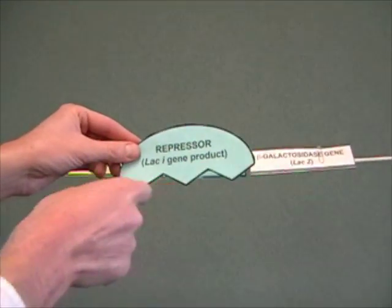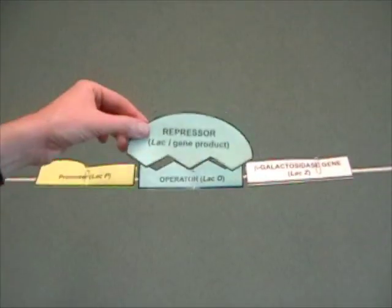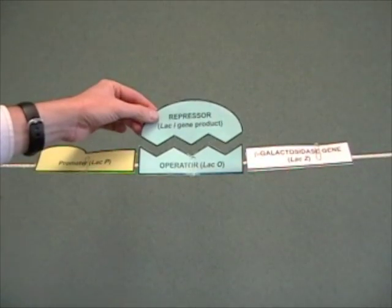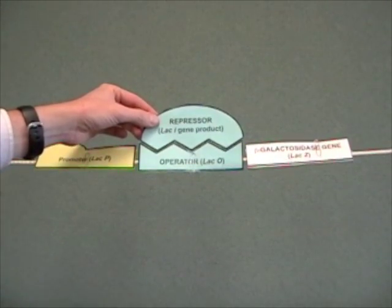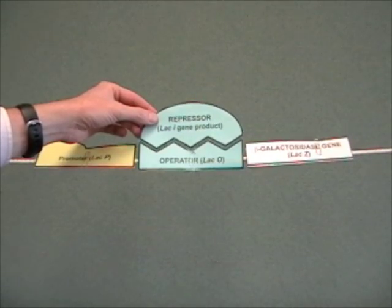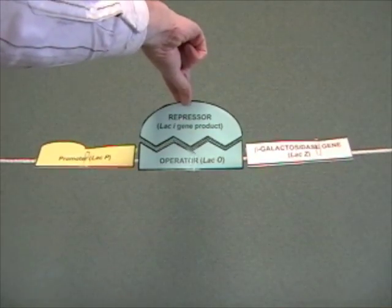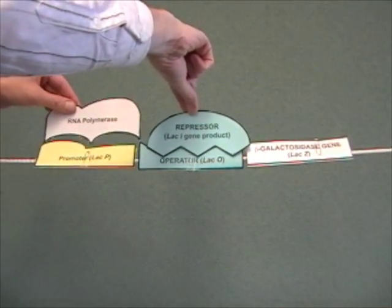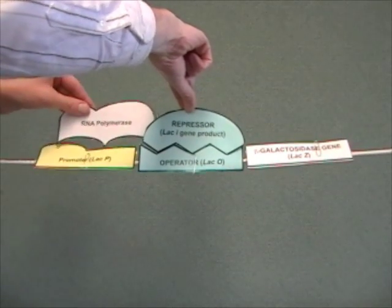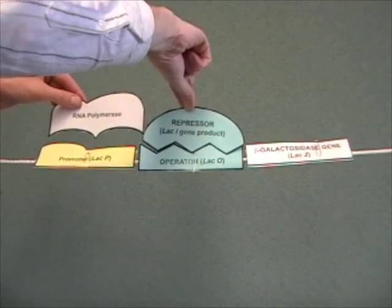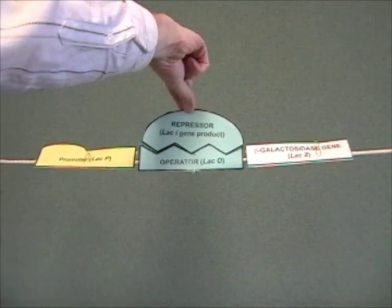By looking at the shape of this protein, you can see that it is able to interact with this sequence called the operator. There's a good binding between those. When the repressor is bound onto the operator, then the polymerase is physically impeded from moving across the operator region to the beta-galactosidase gene, and you don't get expression.